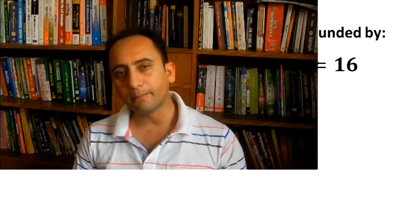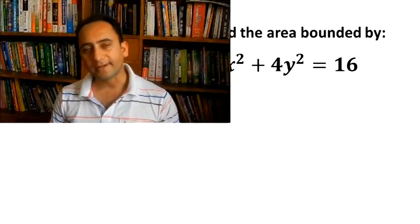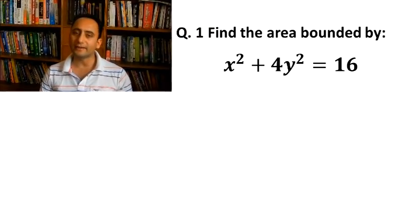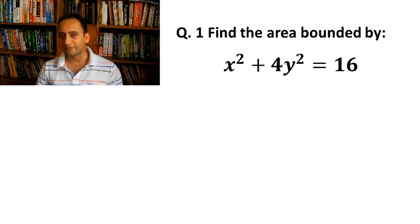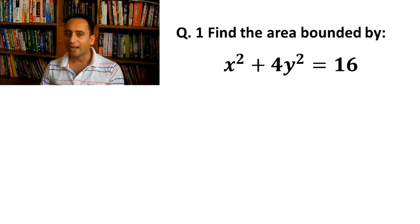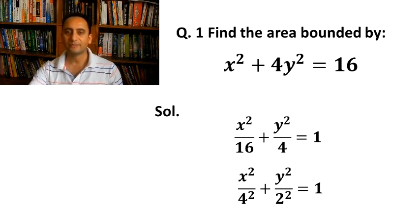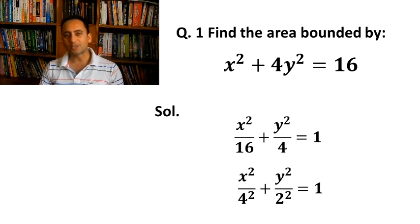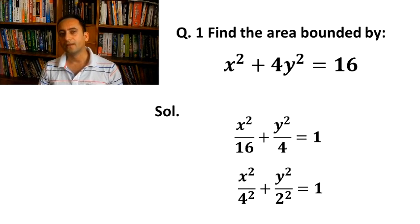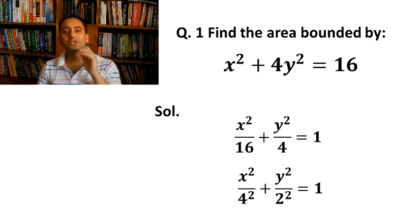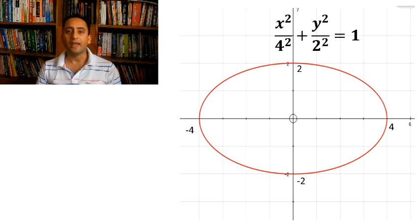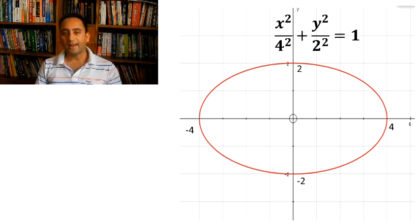The first example: find the area bounded by the curve x² + 4y² = 16. Before starting, we draw a rough sketch of the curve. Since the coefficients of x² and y² are not equal, it cannot be a circle. Dividing by 16 gives x²/16 + y²/4 = 1, or x²/4² + y²/2² = 1, which is the standard equation of an ellipse. Since the denominator of x² is greater than that of y², the major axis is the x-axis.